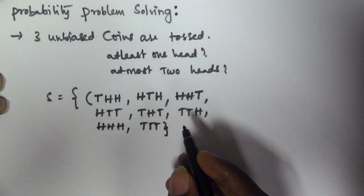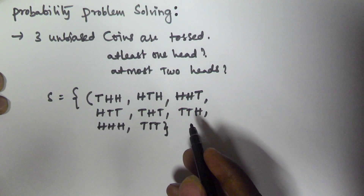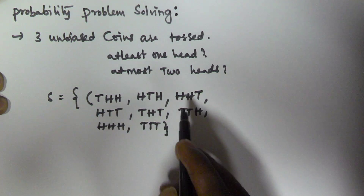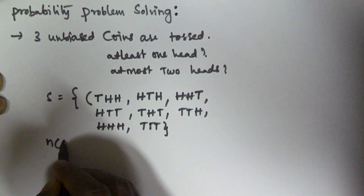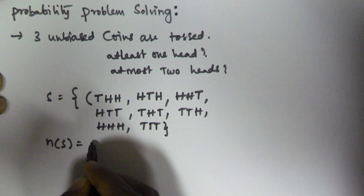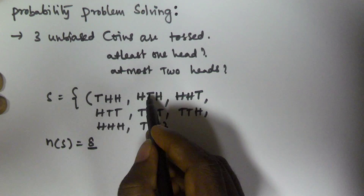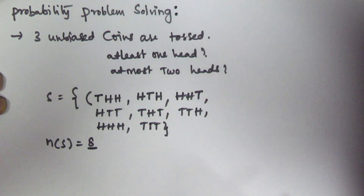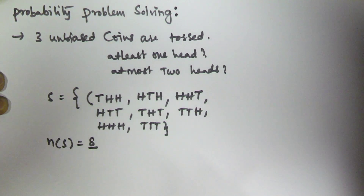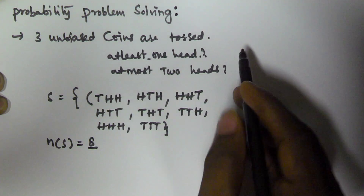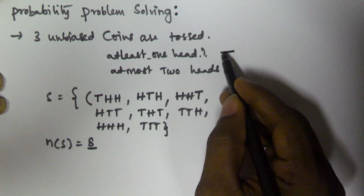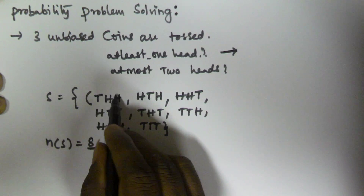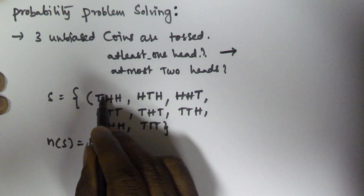This is the sample space whenever we are throwing three unbiased coins. The total number of possible outcomes are these, so n(S) is equal to 8. Now we have to find the probability of at least one head.